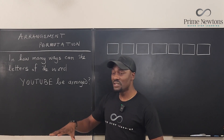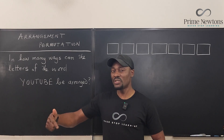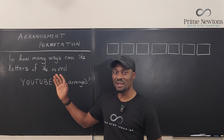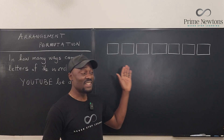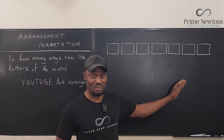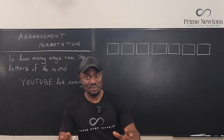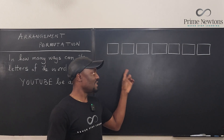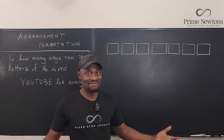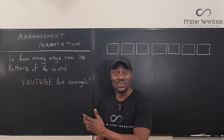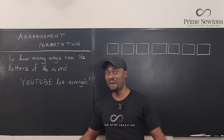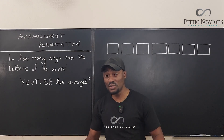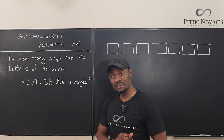This topic is called arrangement or permutation, but what we do mostly is combination or selection. So let's talk about arrangement and permutation. You see these boxes here? This was the strategy with which I learned this topic, and it has always worked for me. Some people are quick to jump to the formulas for permutation and combination, but this just works all the time. If you don't know what this is about, let's just see how many ways you can rearrange the letters of the word YouTube.